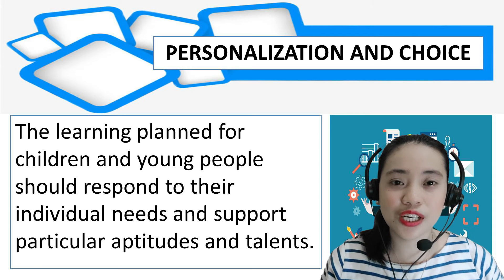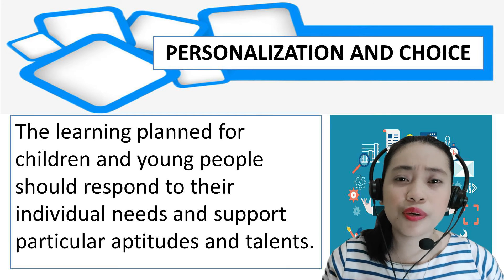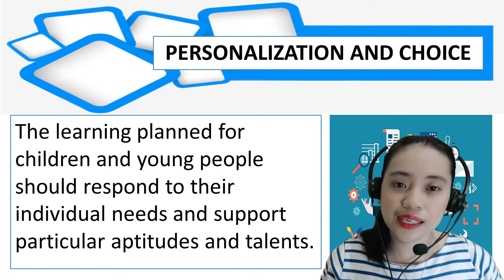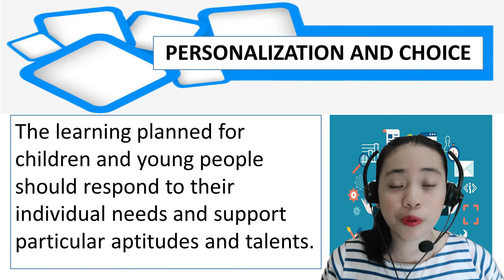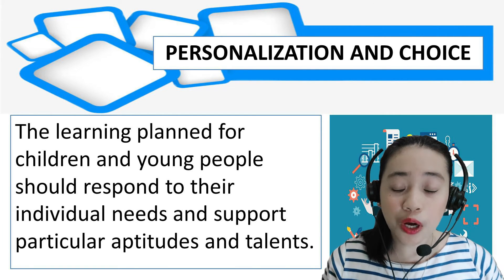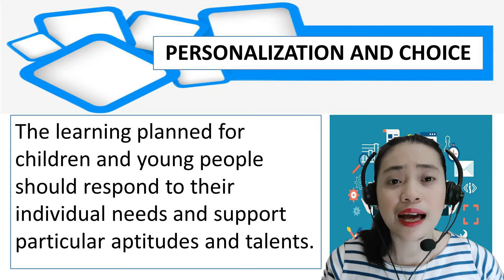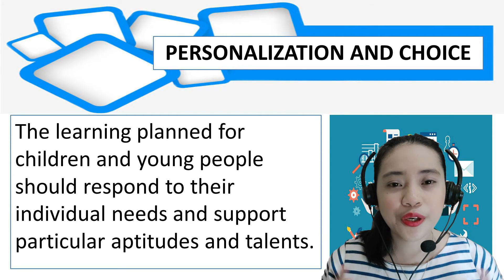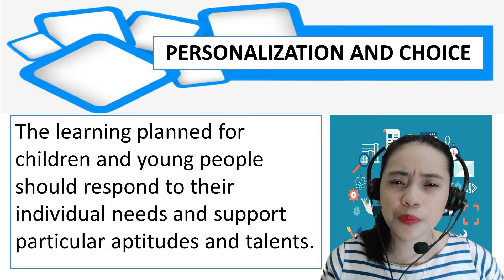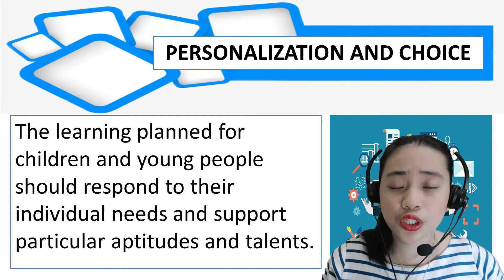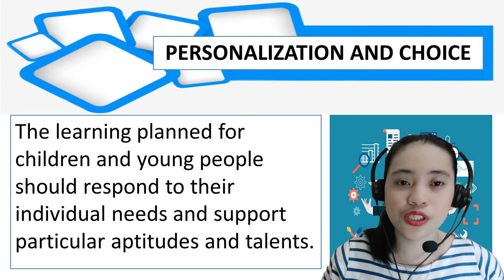Seventh is personalization and choice. The learning planned for children and young people should respond to their individual needs and support particular aptitudes and talents. It should provide opportunities for exercising responsible personal choice. Once children and young people have achieved suitable levels of attainment across a wide range of learning areas, the choice should become as open as possible. Teachers should consider the diversity of learners, including learning styles and the different intelligences of the learners.